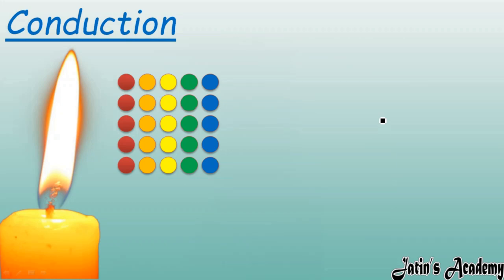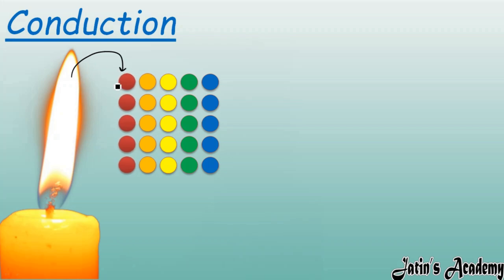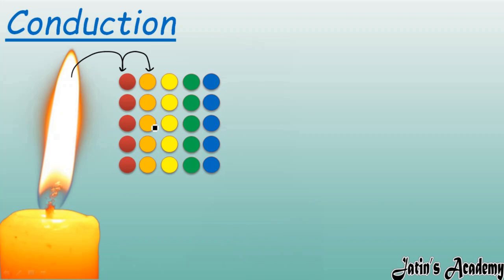In conduction, we take a solid and bring it near heat. The heat energy transfers to the very near particles close to the flame. Those particles take heat energy from the burning candle, start vibrating about their fixed position, and transfer this heat energy to the next particles, which also start vibrating about their mean position.